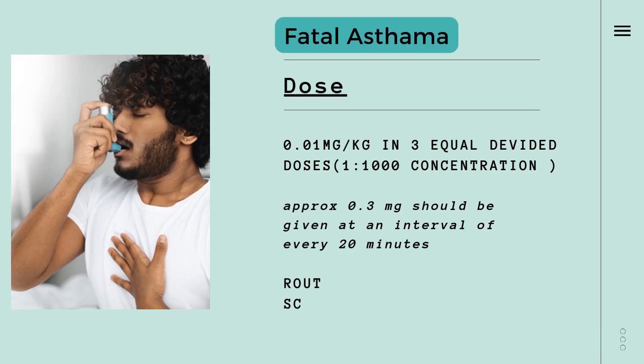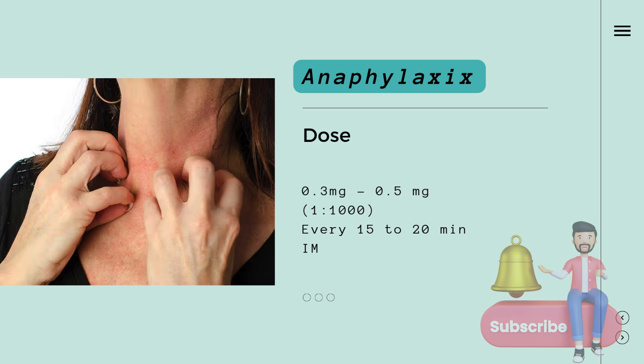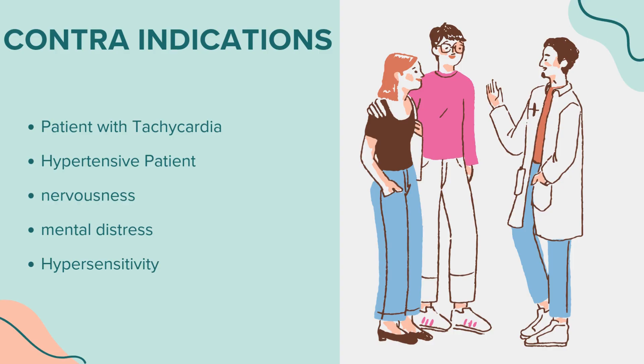Its dosage in fatal asthma is 0.03 per kg in 3 equal divided doses, and its route of administration should be subcutaneous. The dose of Adrenaline in anaphylaxis should be 0.3 to 0.5 mg, and its route of administration should be intramuscular.